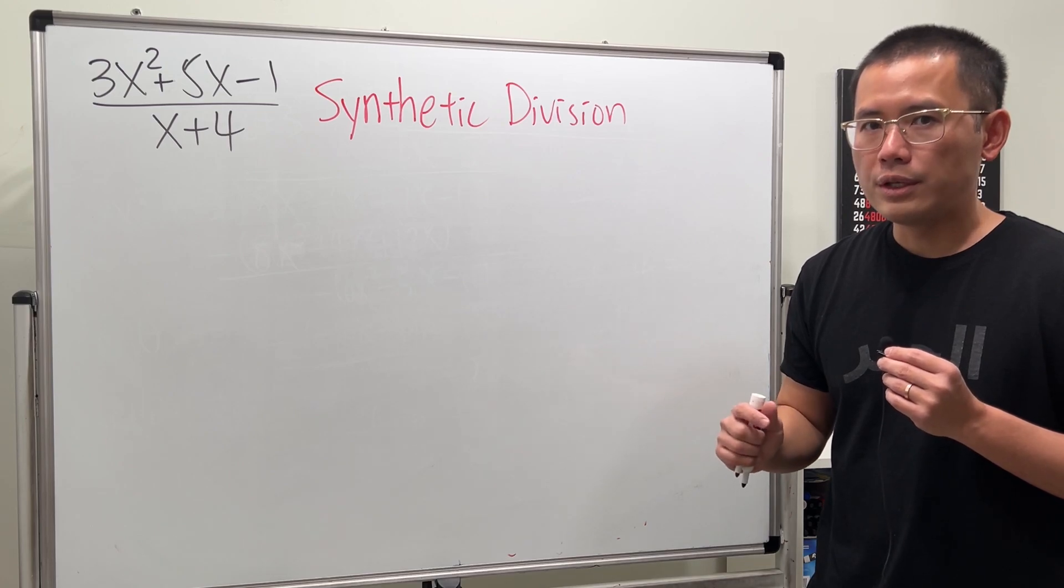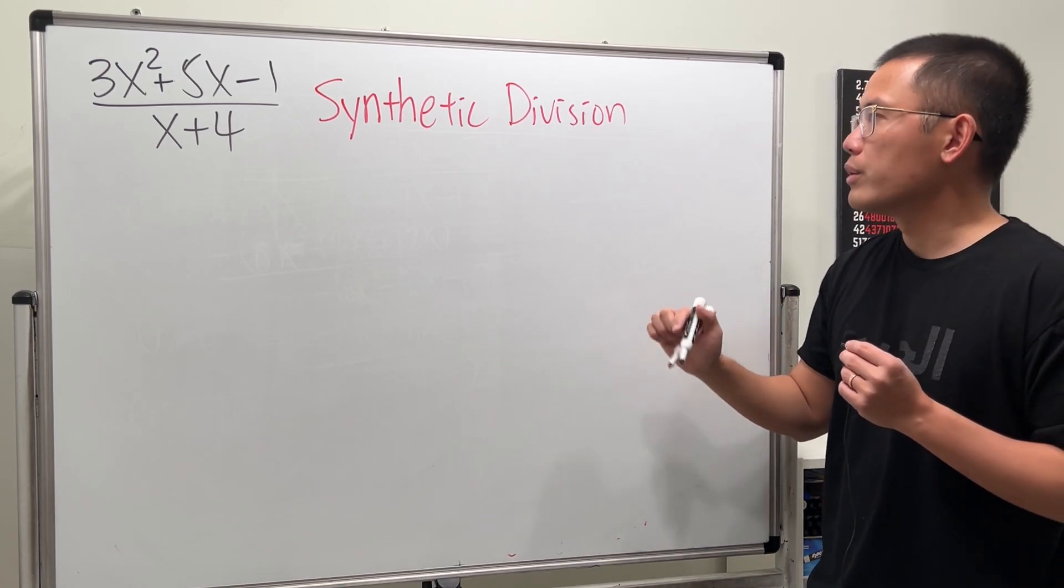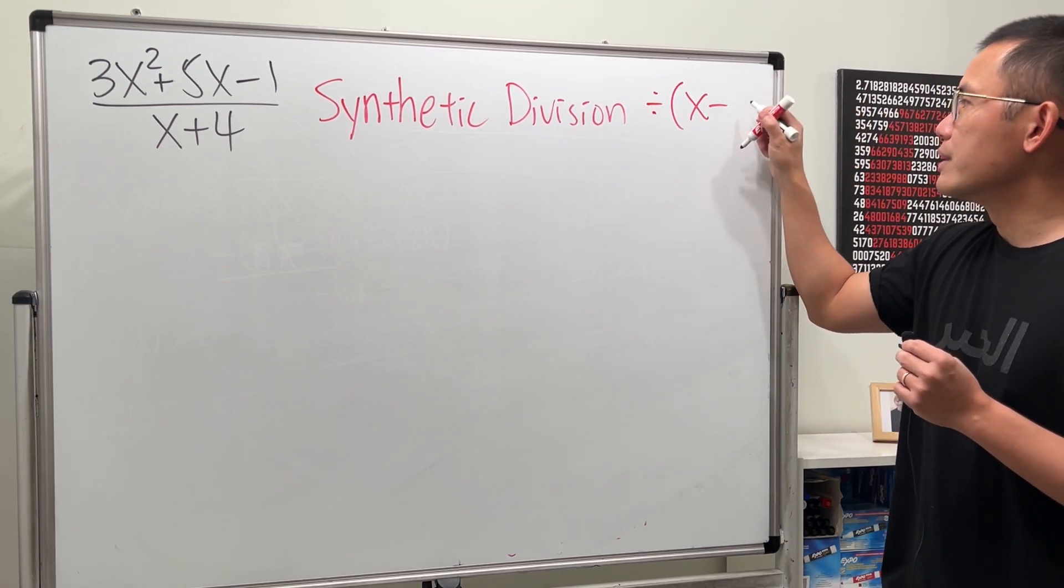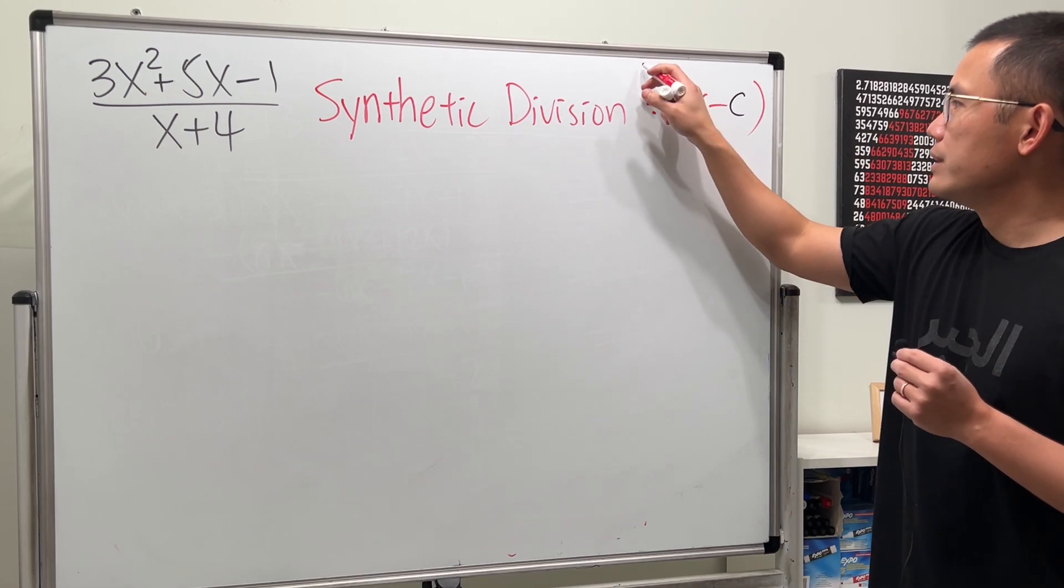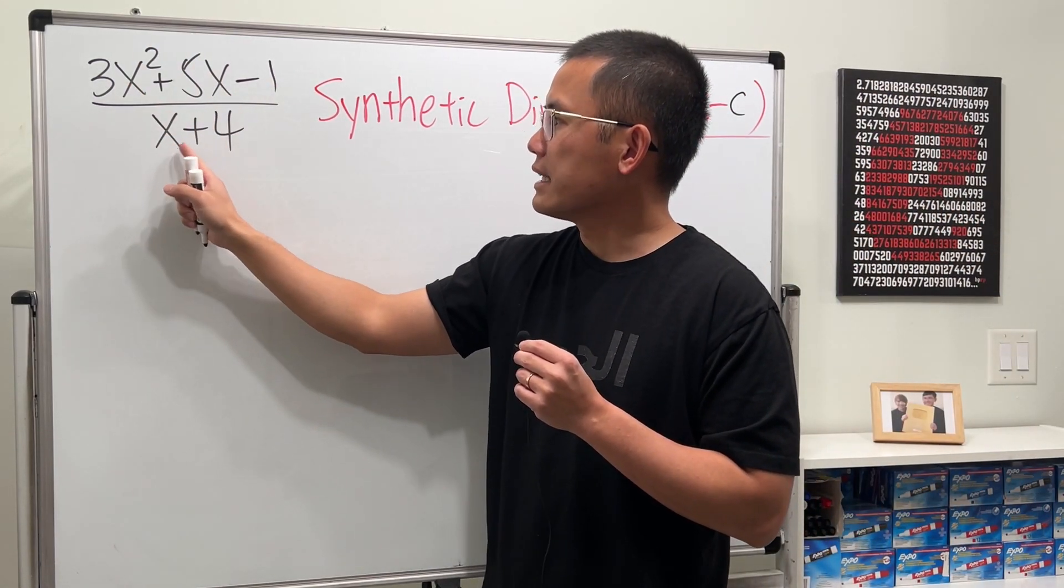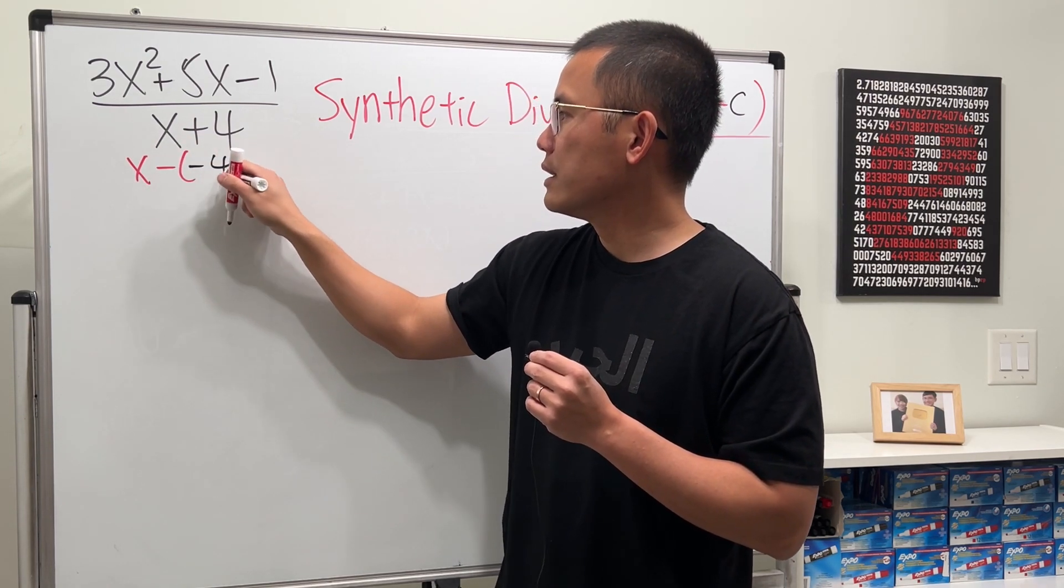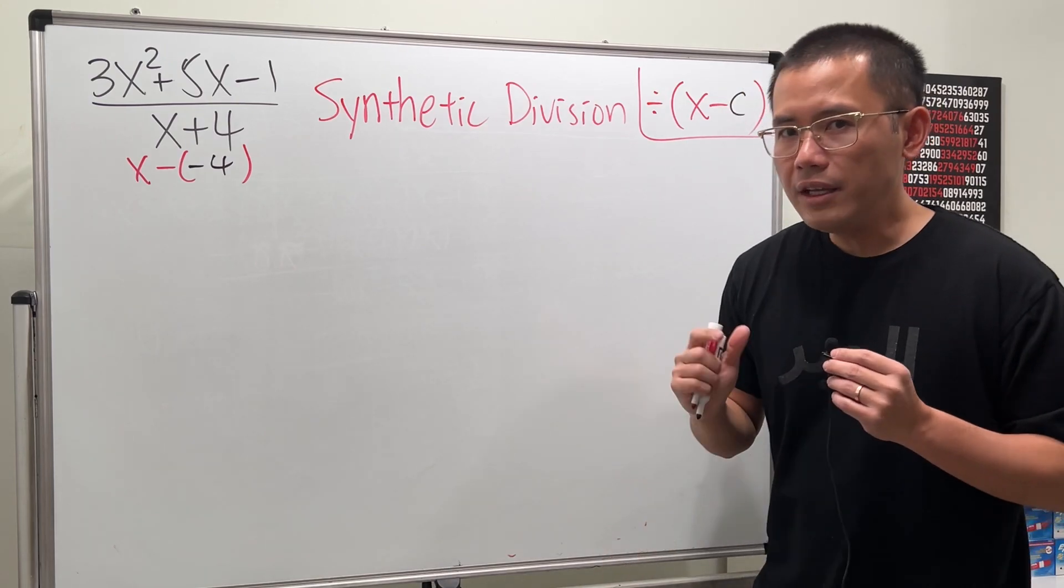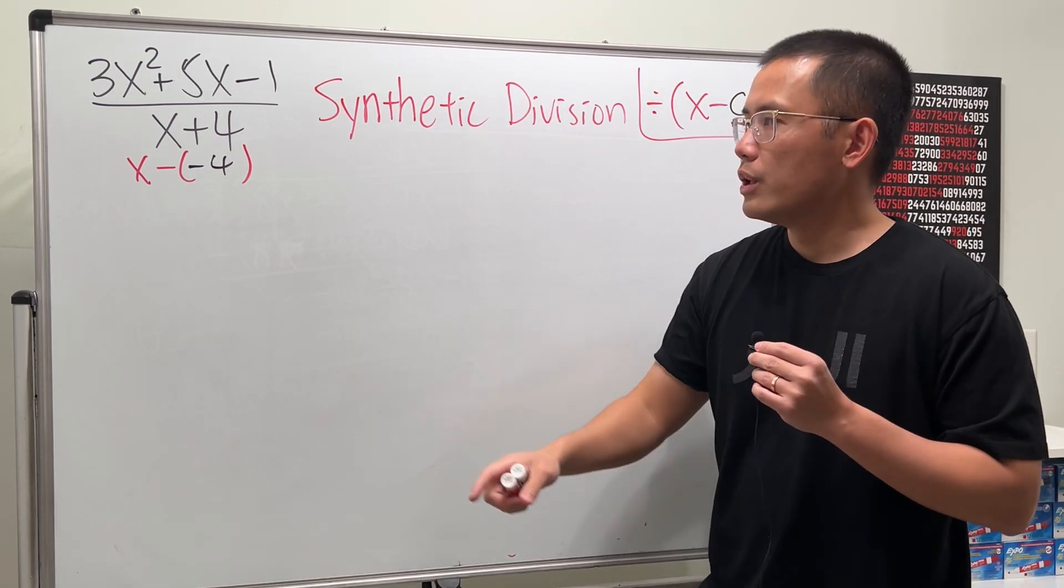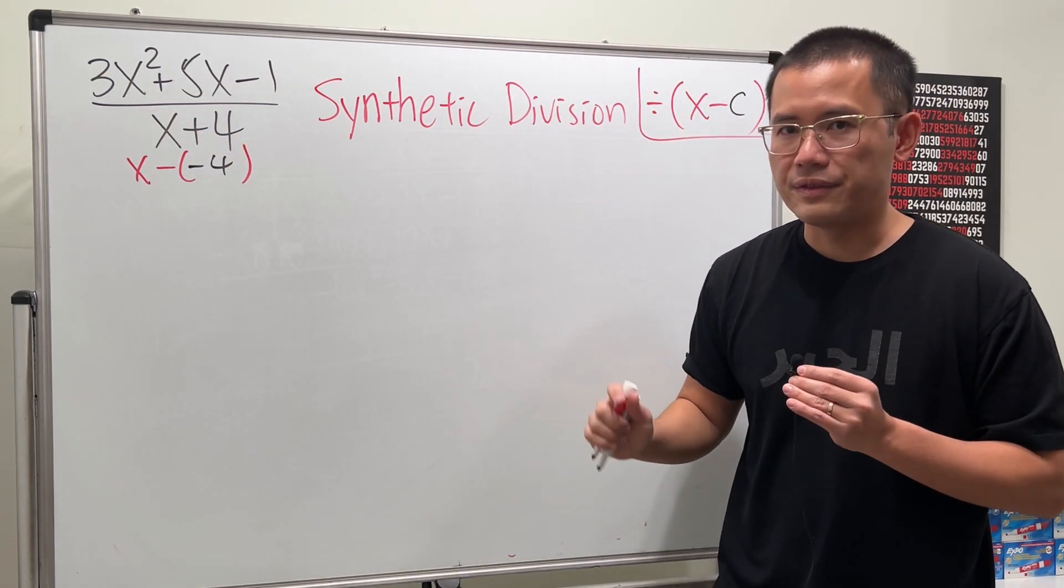However, in this video I would like to just go over the version for the synthetic division that's only when we are dividing by the form of x minus some number. So this right here is the key. As you can see, we have this divided by x plus 4. So you look at this as x minus negative 4. And there are different versions of the synthetic division that's more complete. You can have the number in front, you can have x squared, but I'm not going to cover that in this video.